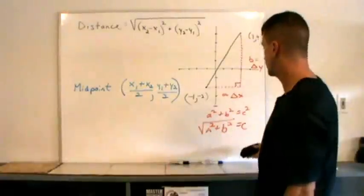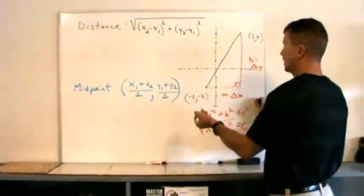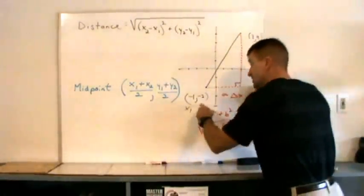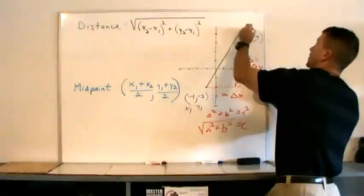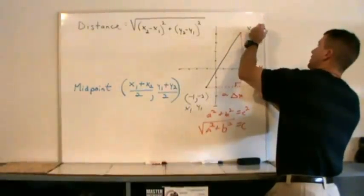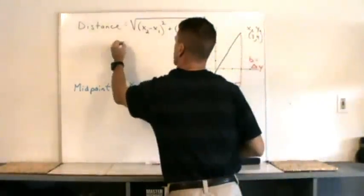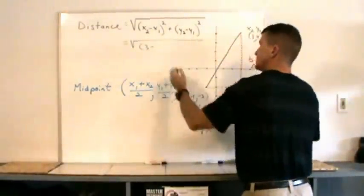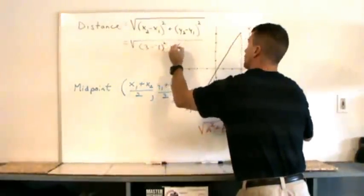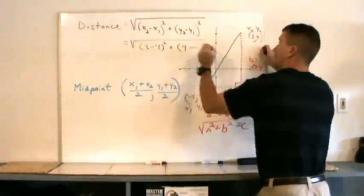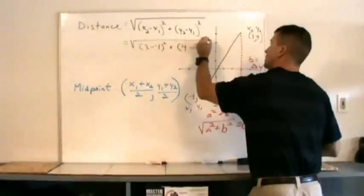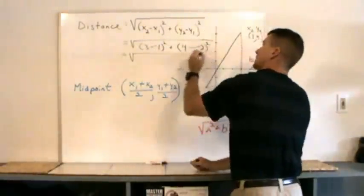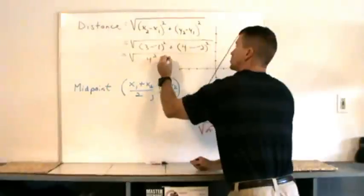Let's find the distance between these two points. It doesn't matter which one we call x₁. Let's call this one x sub one — then this coordinate is y sub one, and that makes the other point x sub two and y sub two. So: the square root of three minus negative one squared plus four minus negative two squared. Three minus negative one is four, and we'll square it.